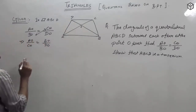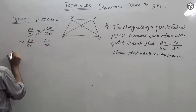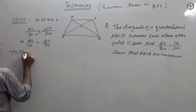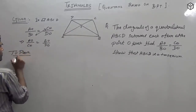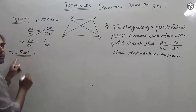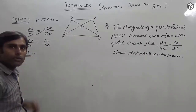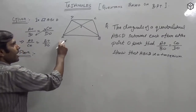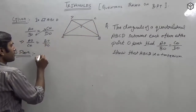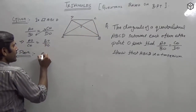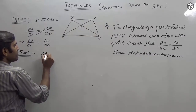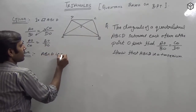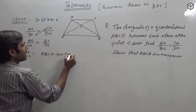Now we can state what we need to prove. To prove: ABCD is a trapezium. That means we need to show that one pair of opposite sides is parallel.